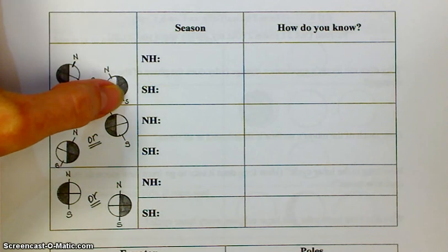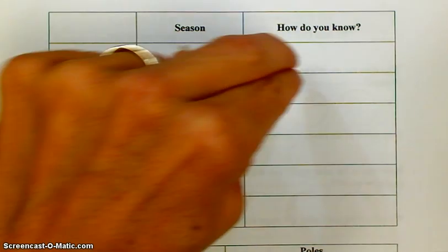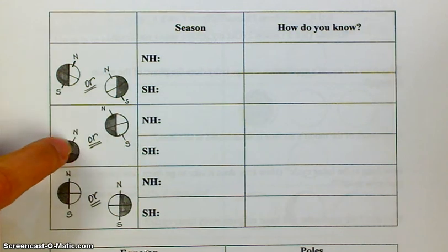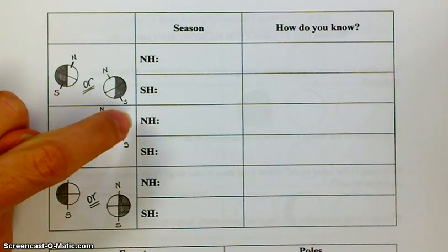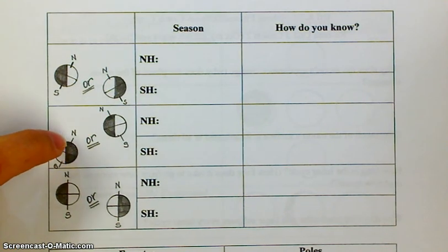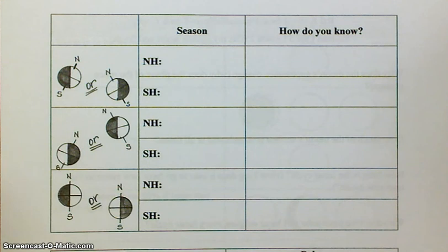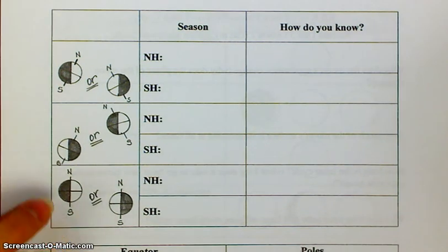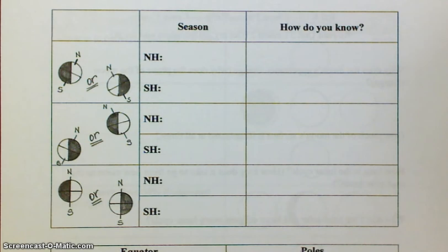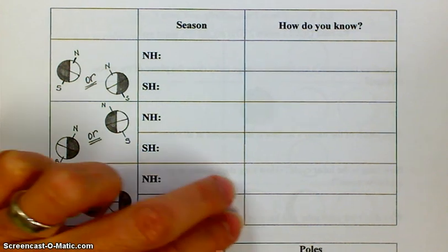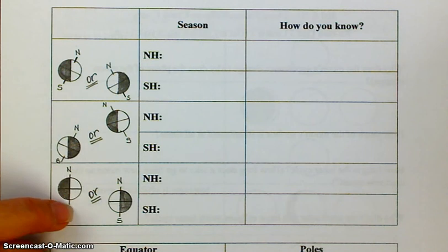The southern hemisphere is having winter because the south pole is on the nighttime side of the terminator. The next one is just the opposite — north is on the nighttime side of the terminator, south is on the daytime side. So the northern hemisphere is having wintertime and the southern hemisphere is having summer because it's on the daytime side of the terminator. On the last one, notice that the terminator runs directly from pole to pole, so neither pole is on the nighttime side. This means it's either fall or spring — you can't tell which hemisphere is having which, so just put fall/spring for both. You know this because the terminator goes from north pole to south pole.